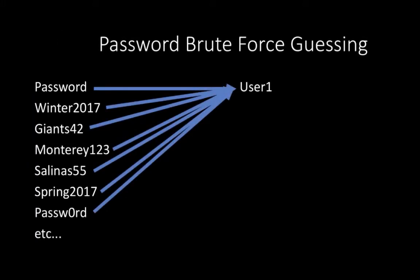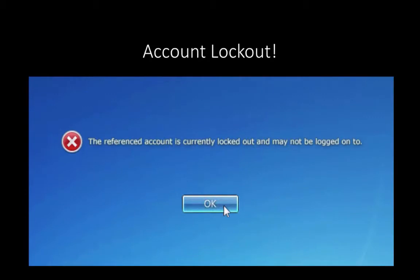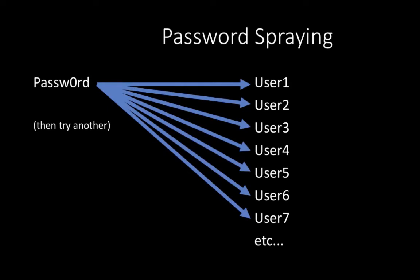Here's the problem. If we take these passwords and use them all at once against one account, we could easily lock out the user account and create a lot of noisy lockouts that might reveal to the organization what we are doing. Since we want to do this quietly and under the radar, we need a different approach — and that approach is called password spraying. Instead of guessing a large number of passwords against one user account, we take one password and guess it against a whole list of accounts, then switch to the next password. This minimizes account lockout and spreads the noise over all accounts.